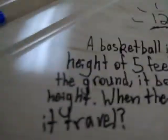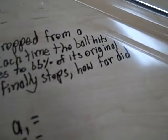A basketball is dropped from a height of 5 feet. Each time the ball hits the ground, it bounces to 65% of its original height. When the ball finally stops, how far did it travel?